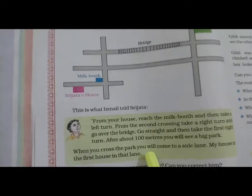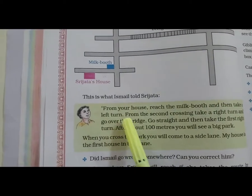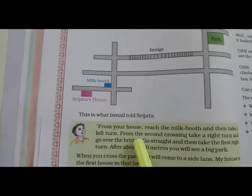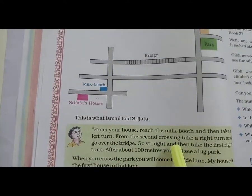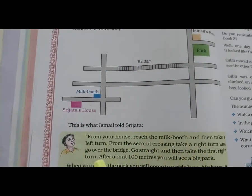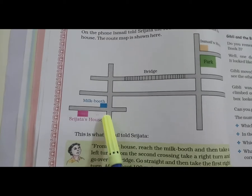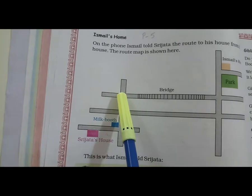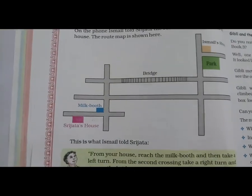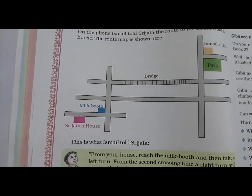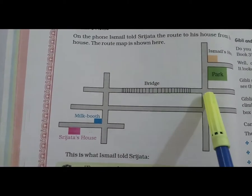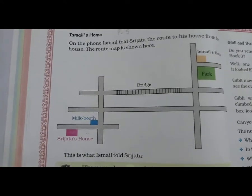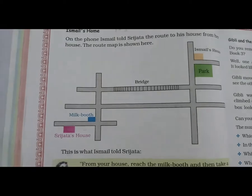What is this map? From your house, reach the milk booth and then take a left turn. From the second cross, take the right turn and go over the bridge. Reach the bridge. The first step: go over the bridge, go straight, and then take the first right. This is the right side and this is the left side. And turn about hundred meters.